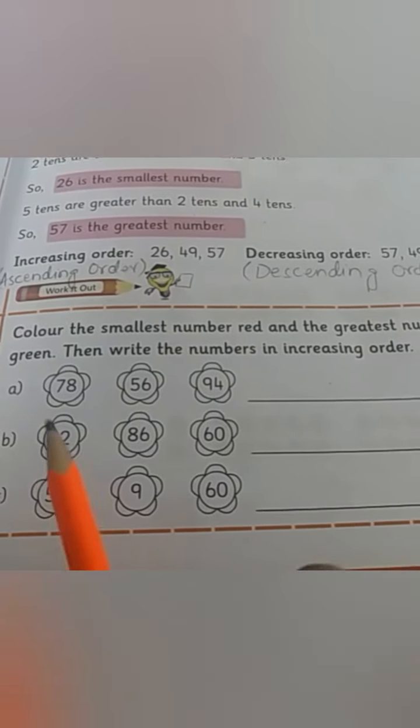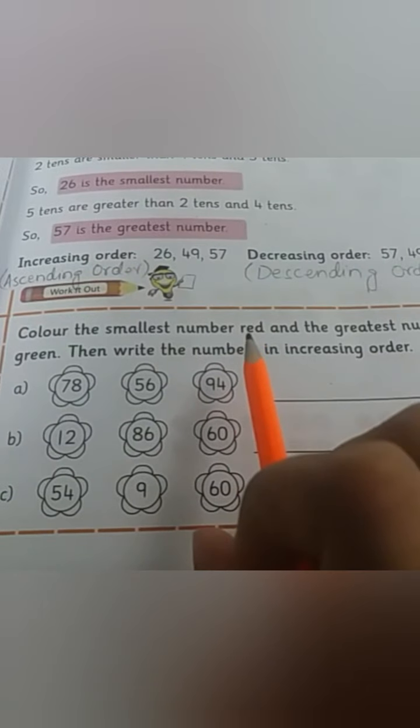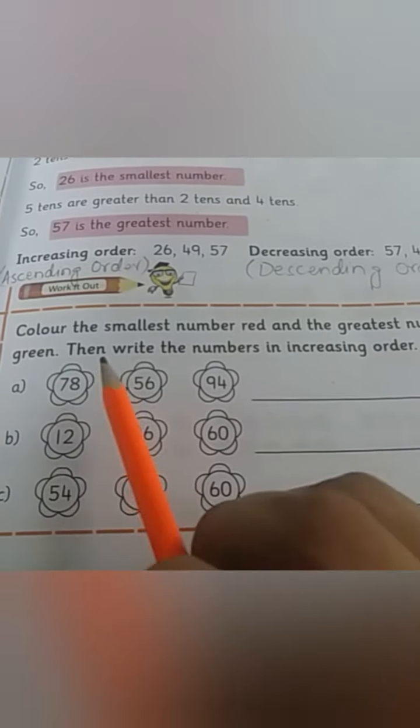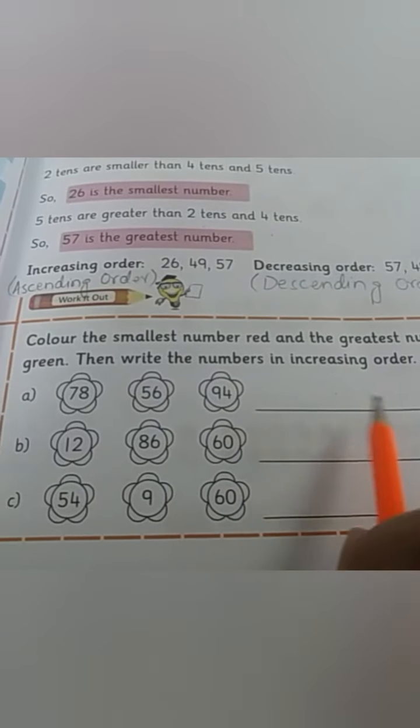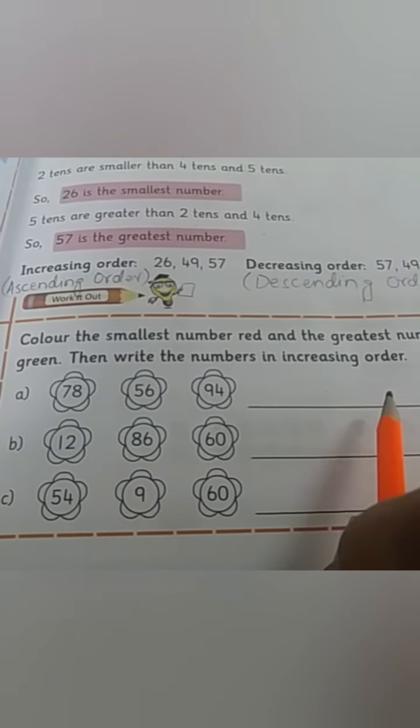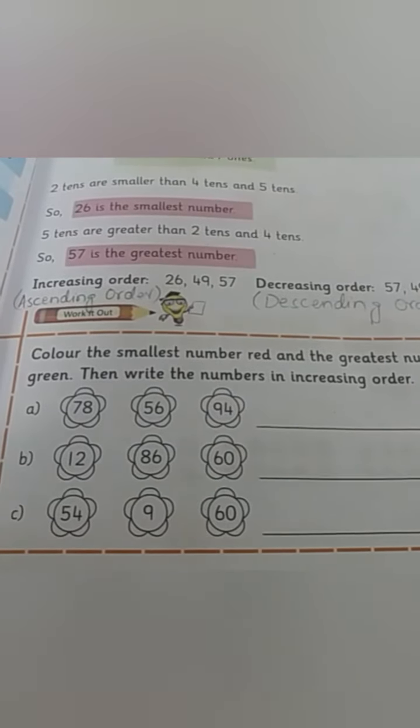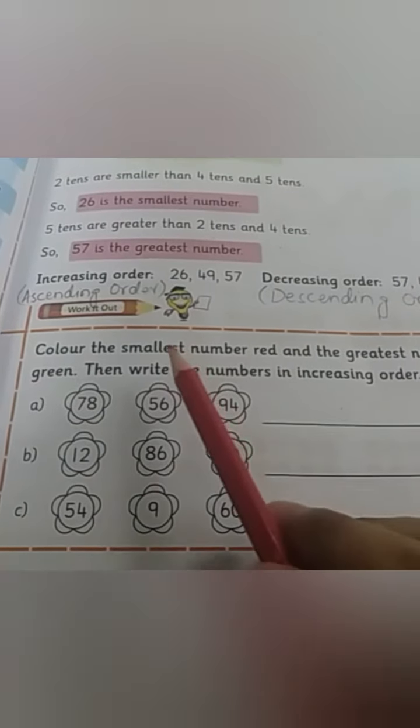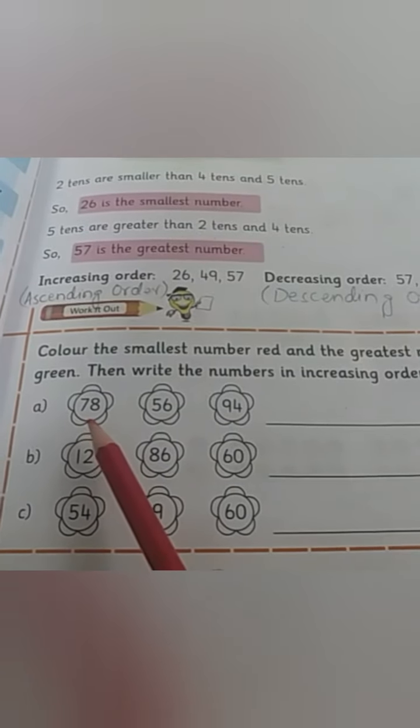Now next, we have: color the smallest number red and greatest number green. Here you have flowers with numbers. Then write the numbers in increasing order. Increasing order means ascending order. So we find out which one is the smallest.